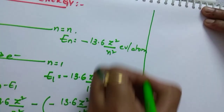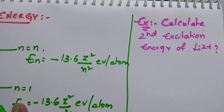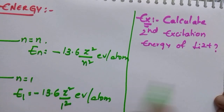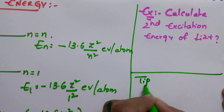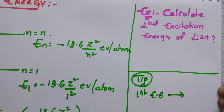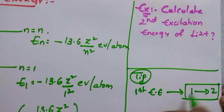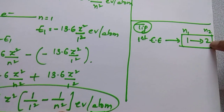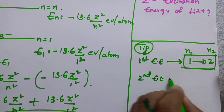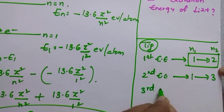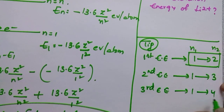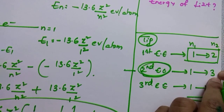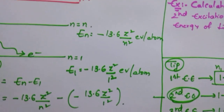Now try this question: calculate the second excitation energy of Li²⁺. Solutions for these three questions will be given in the next video — try them yourself first. Here is an important tip: first excitation energy means the transition is from n=1 to n=2. Second excitation energy means the transition is from 1 to 3, and third excitation energy means 1 to 4. A common mistake students make is substituting n=2 for second excitation energy — that is wrong. I hope you like this video, please give your like.